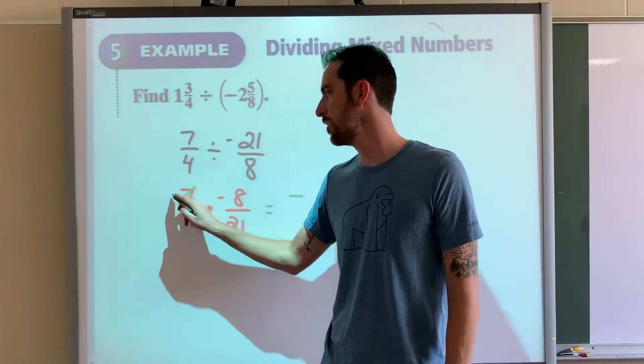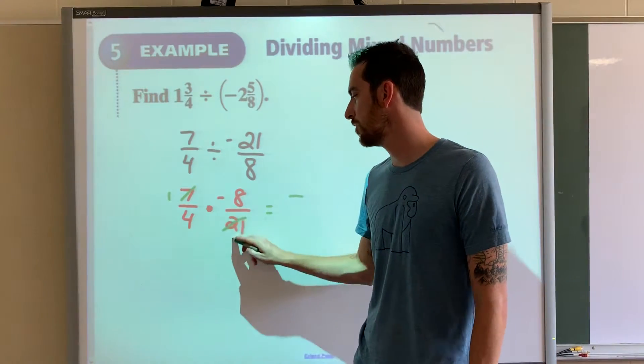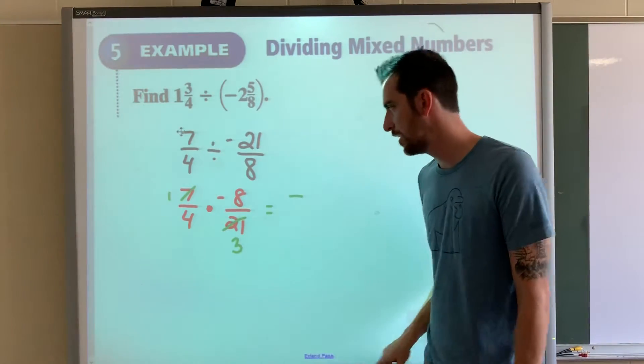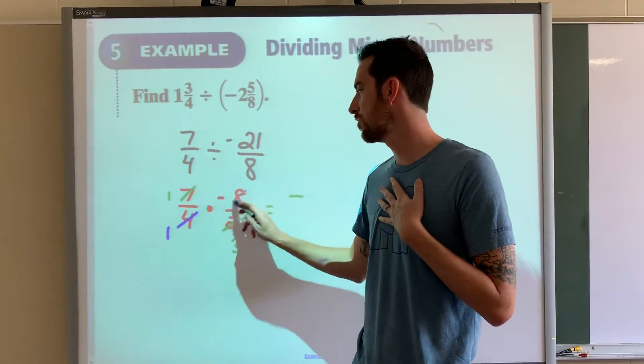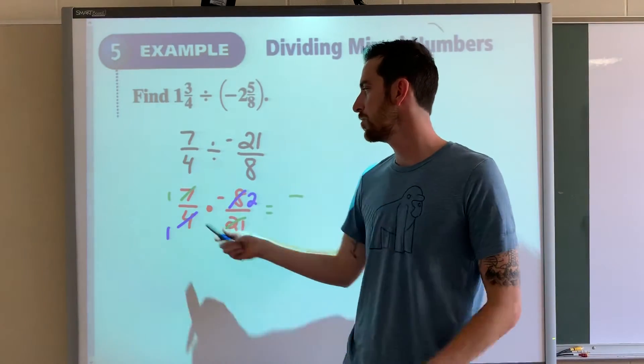7 goes into 21—7 goes into 7 once, 7 goes into 21 three times. 4 goes into 8—4 goes into 4 once, 4 goes into 8 twice.